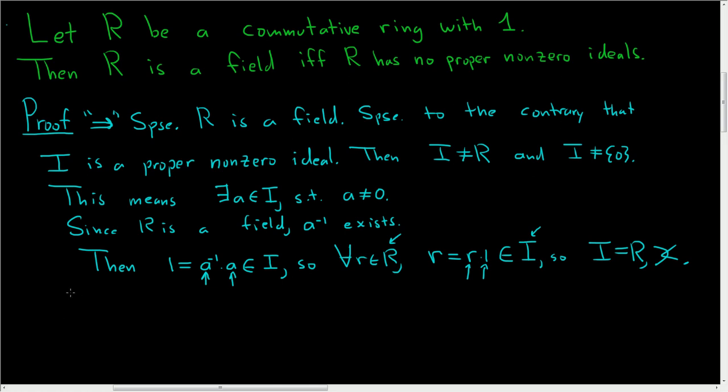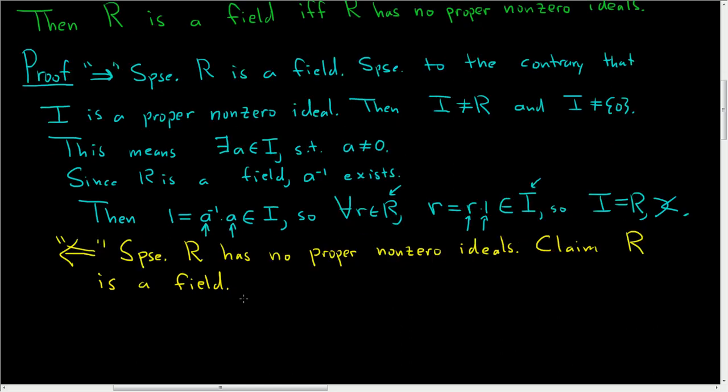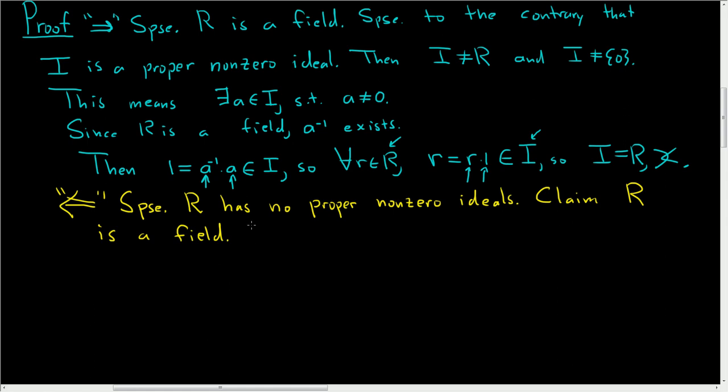So that takes care of the first direction. Now we'll prove the other direction. So suppose R has no proper non-zero ideals. And the claim is that R is a field. So to show it's a field, we have to show that every non-zero element is a unit. So take any A in R, A not equal to zero.